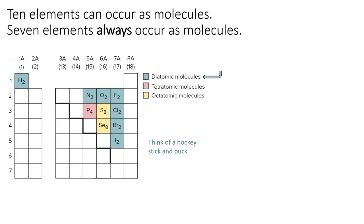Ten elements occur naturally as molecules, and seven elements always occur as molecules. These are some of the most common elements on Earth, and you will need to write them correctly on upcoming exams. In other words, you have to memorize the seven diatomic elements here in green.